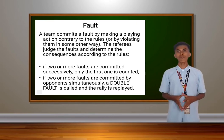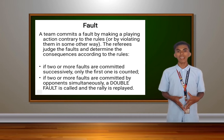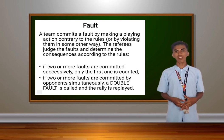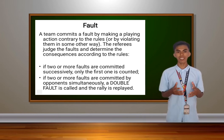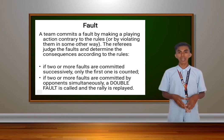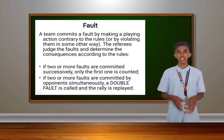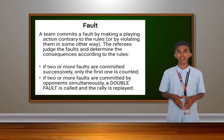Next, the fault of the volleyball. A team commits a fault by making a playing action contrary to the rules or by violating them in some other way. The referees judge the fault and determine the consequences according to the rules. If two or more faults are committed successively, only the first one is counted.